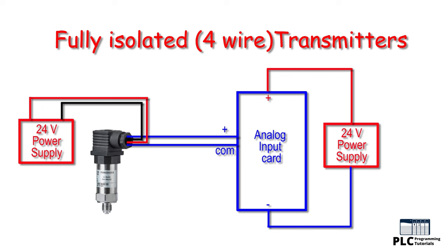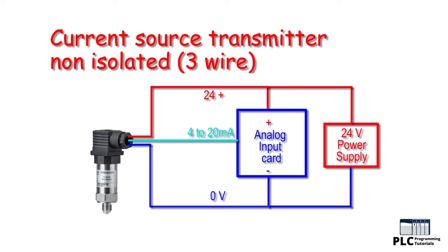3-wire non-isolated transmitter: this is the most common configuration of modern 4 to 20 milliamp transmitters. The transmitter and control panel can use the same 24V and 0V DC lines. The 4 to 20 milliamp signal flows through the 24V DC line and the signal line to the PLC controller. This type of wiring configuration needs only a 3-core cable from the control panel to the transmitter, and a common power supply is used for both the transmitter and the control panel or PLC.